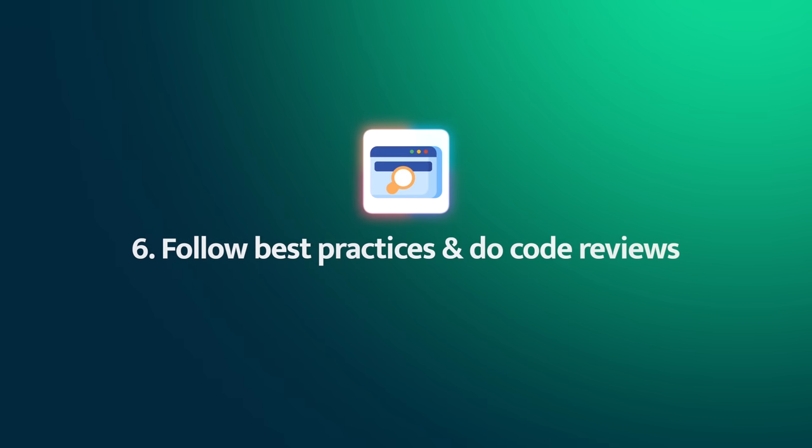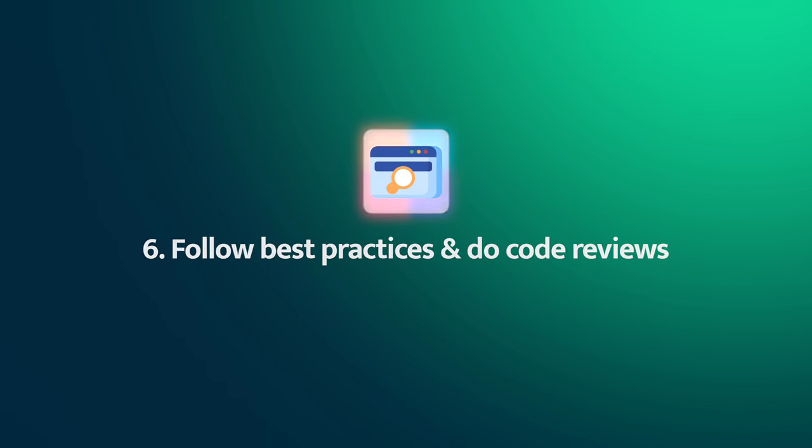Tip number six is to follow coding standards and conduct code reviews. As a small team you need to decide on those things. For coding style, don't spend too much time on it — you don't have to reinvent the wheel. For Python, just follow PEP8 and use Black to auto-format your code. If you're working with JavaScript or TypeScript, just use Prettier and be done.